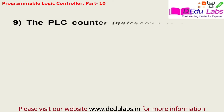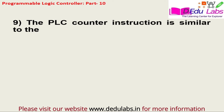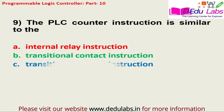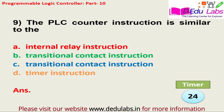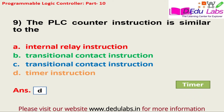Question number nine: The PLC counter instruction is similar to the — option A, internal relay instruction; option B, transitional contact instruction; option C, transitional contact instruction; option D, timer instruction. The answer is option D, that is a timer instruction.